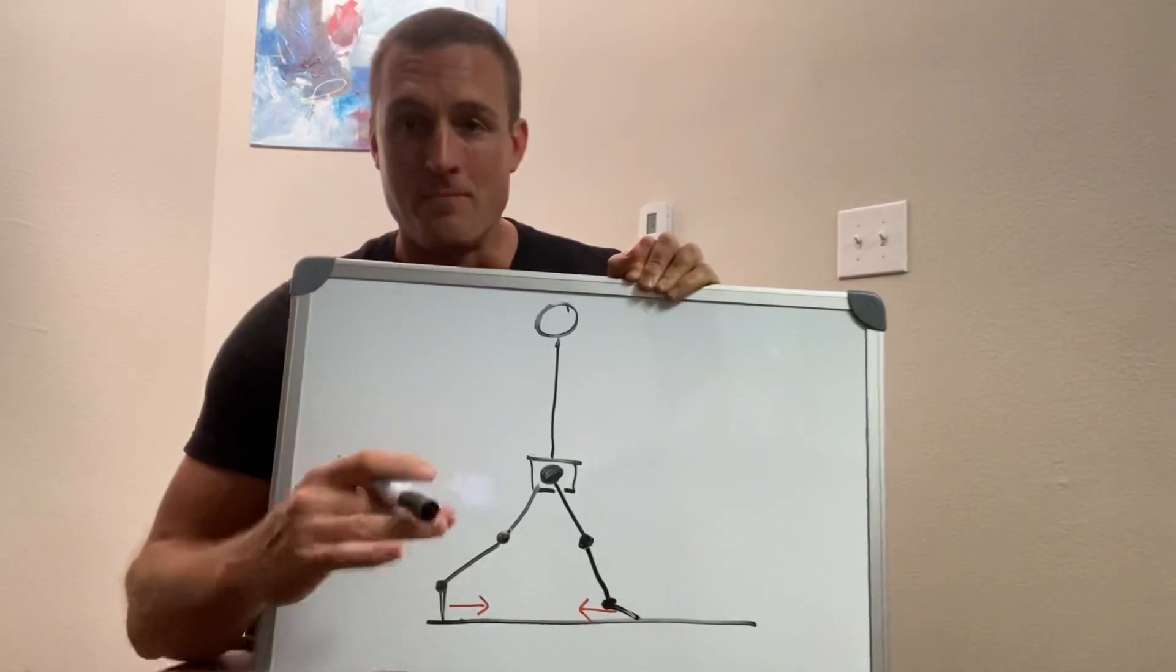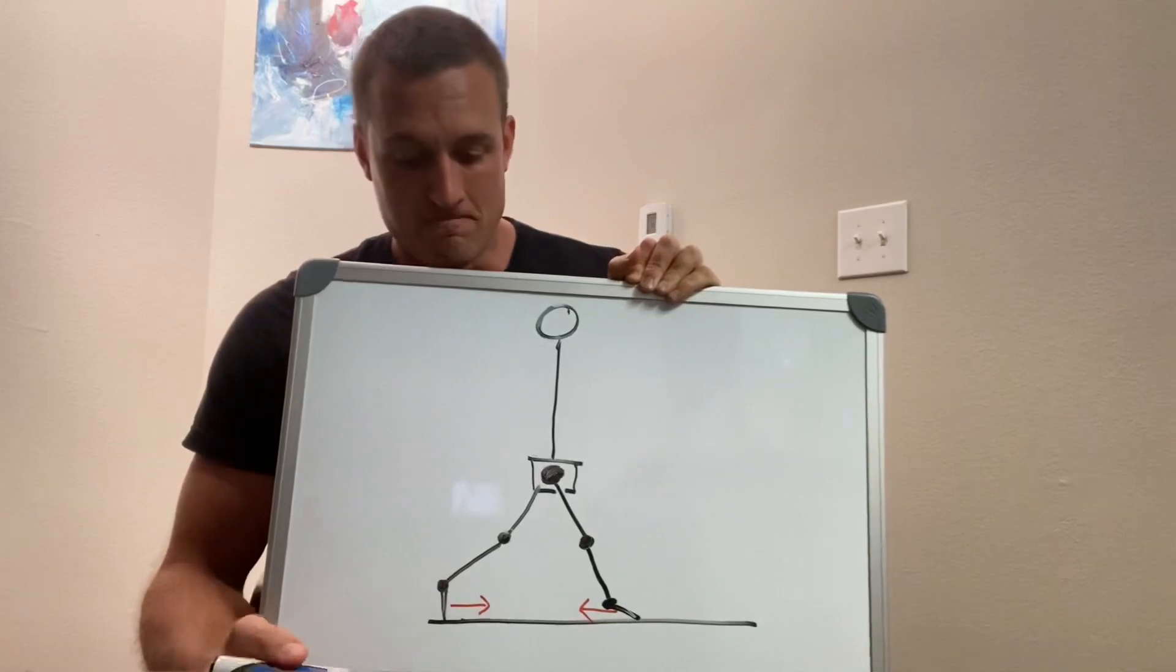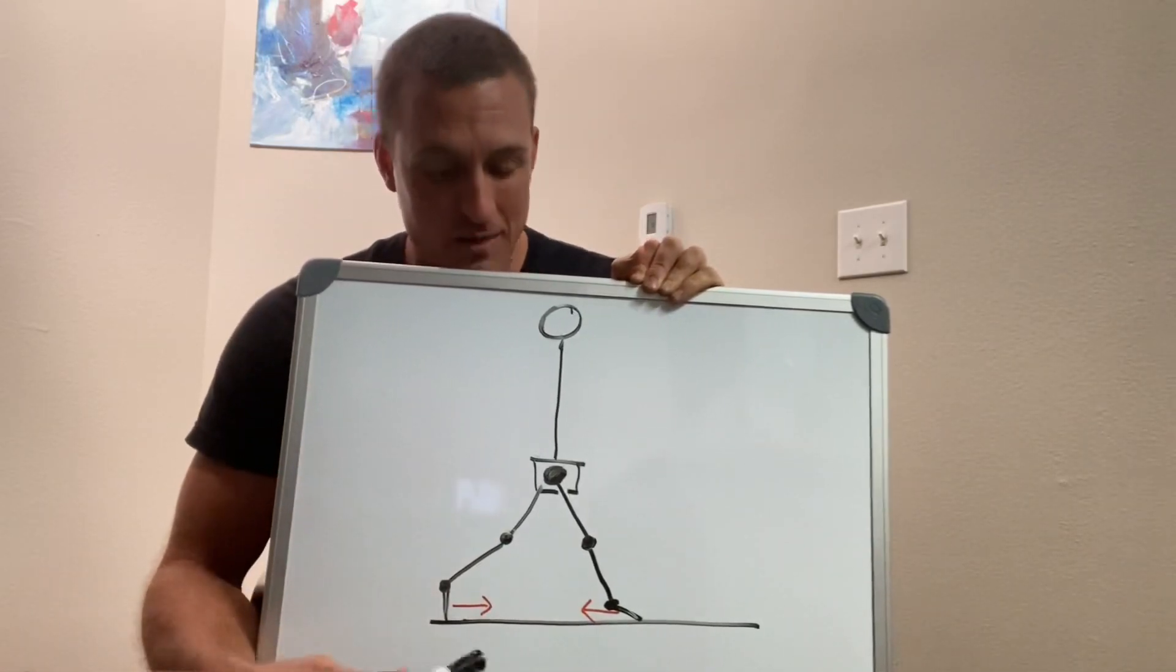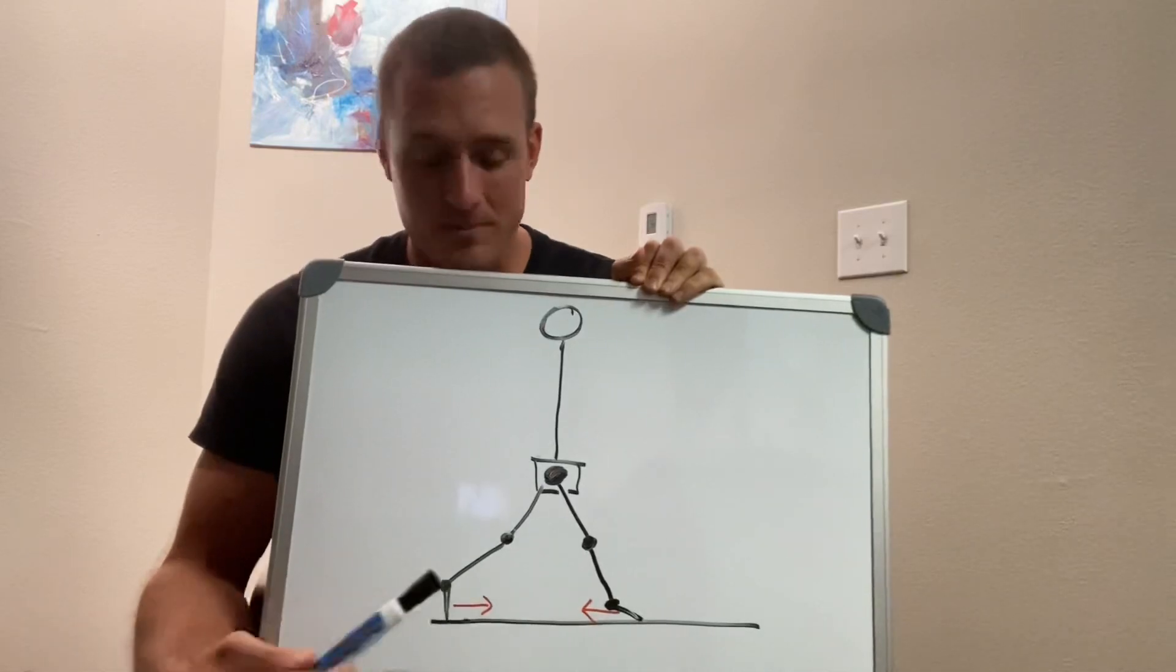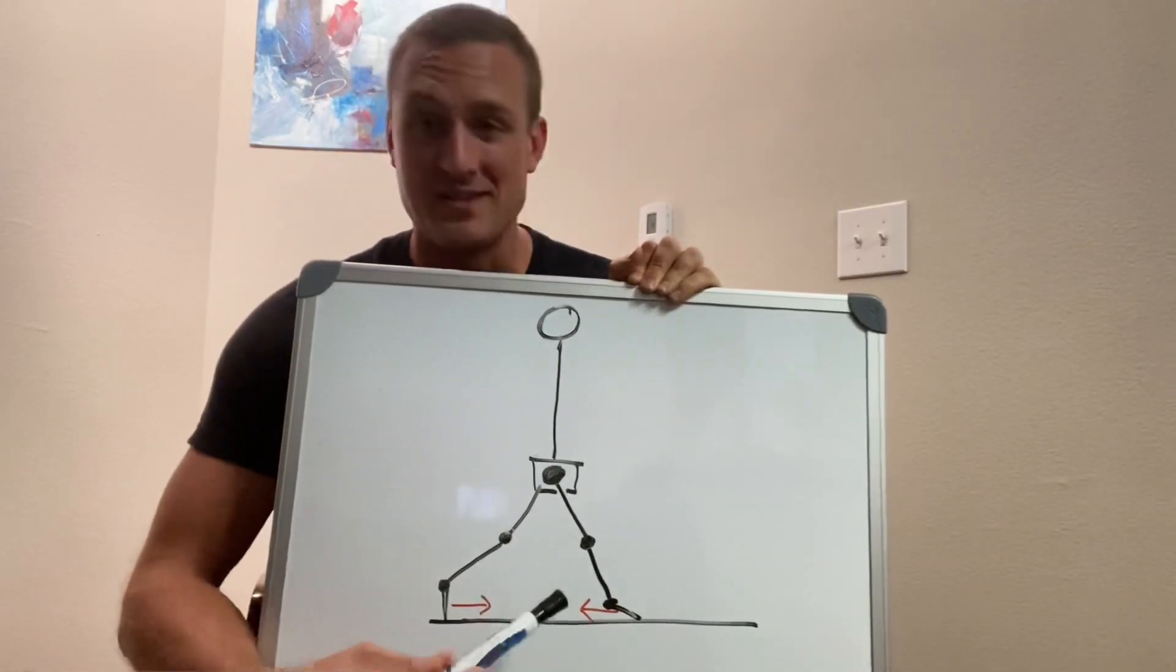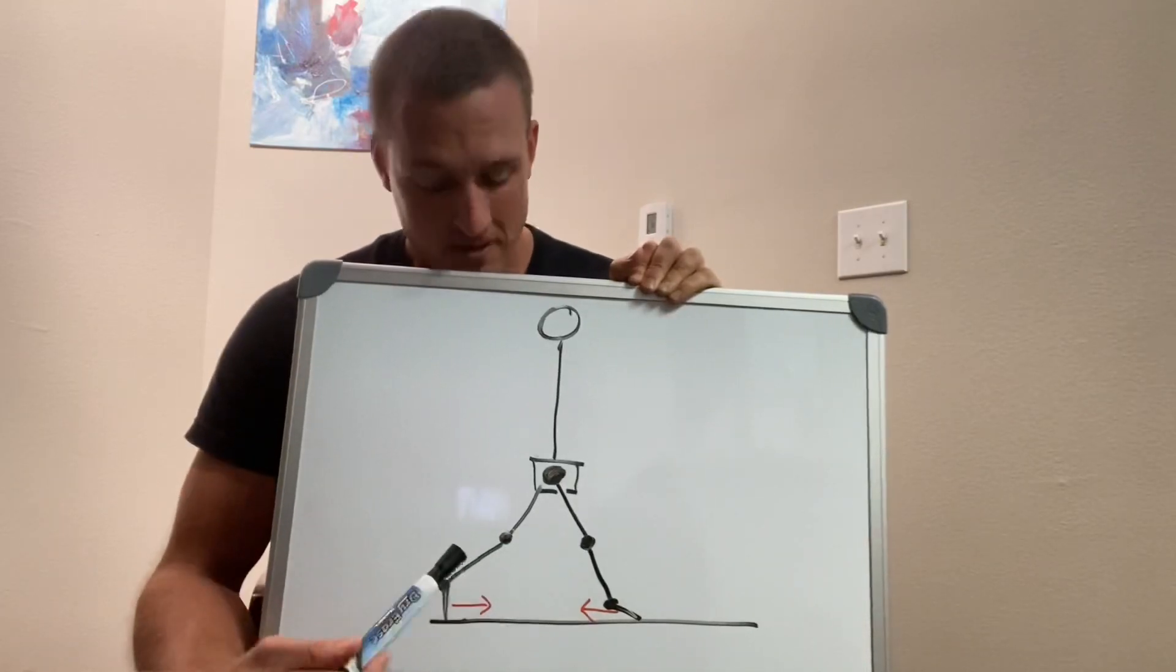Now, as people get faster, they tend to decrease contact time. And so they probably do, as they develop, use this strategy less. And that's why you would tend to see this less from elite sprinters.